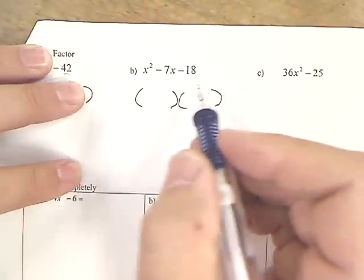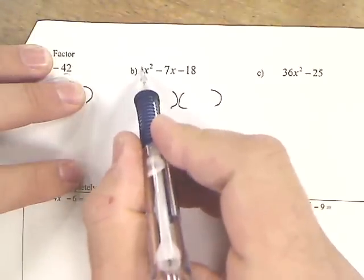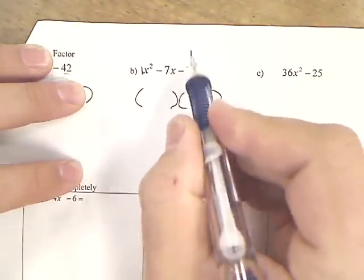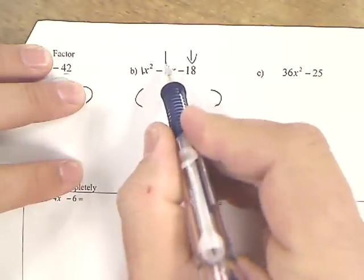This is what we've been calling the quick factoring. Since there's a 1 in front of the x squared, we have a trick. Two numbers that multiply together would be that guy, add together would be here.